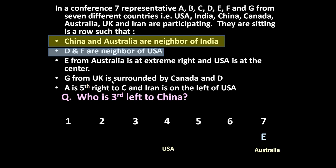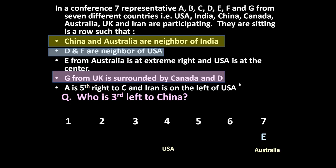Next: G from UK is surrounded by Canada and D. But where is UK, where is Canada, where is D — we don't know anything. Then: A is 5th right to C, and Iran is on the left of USA.